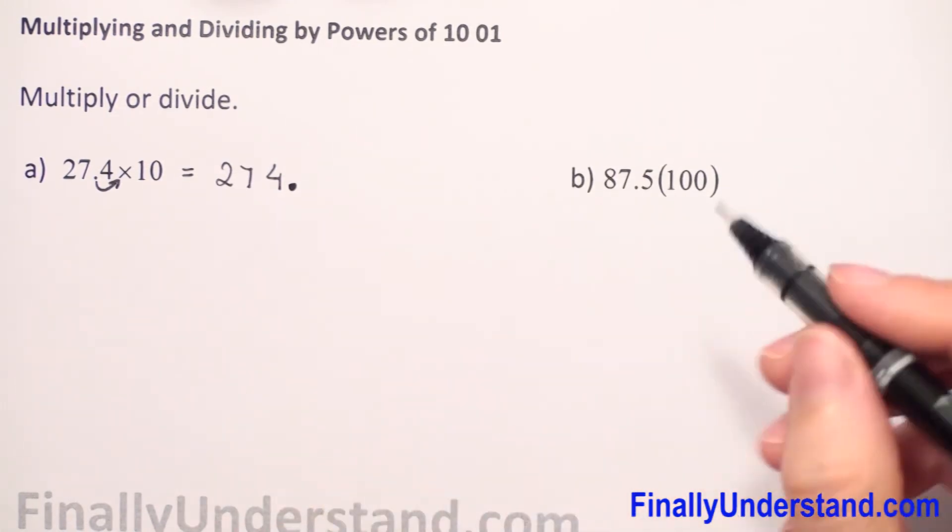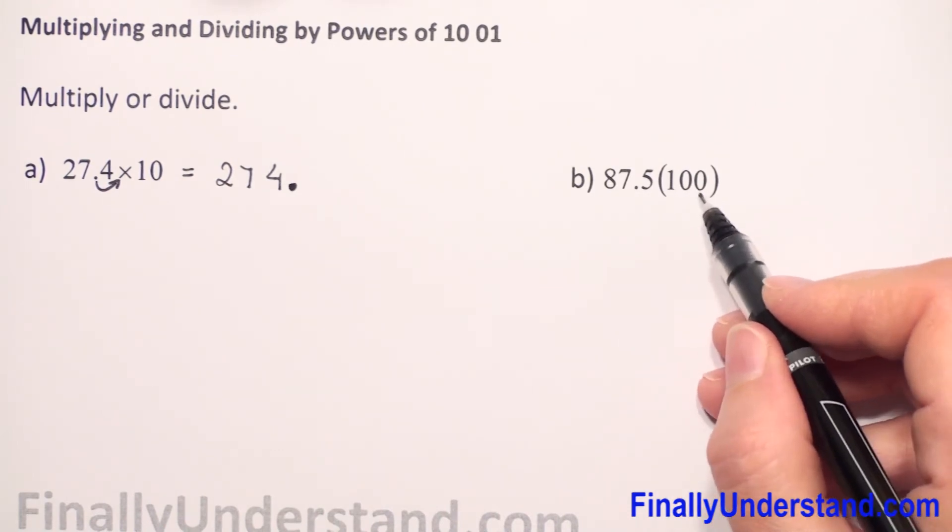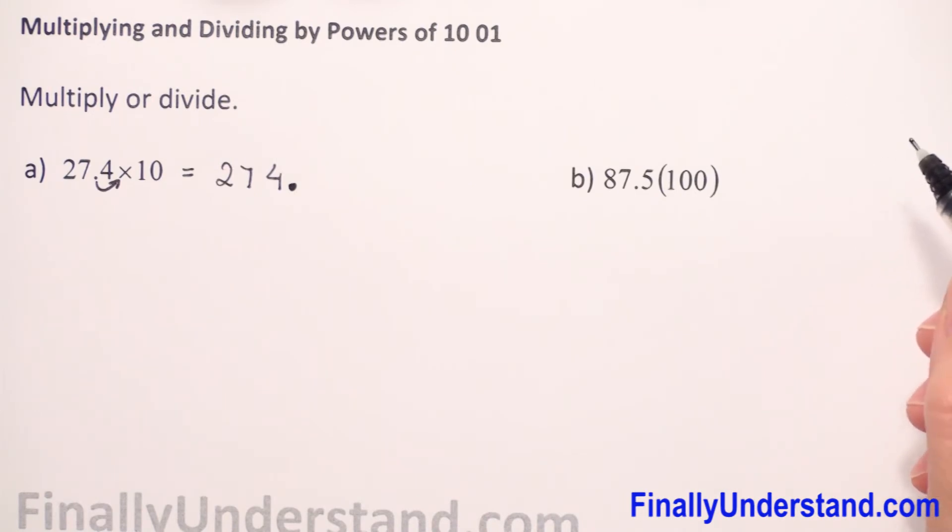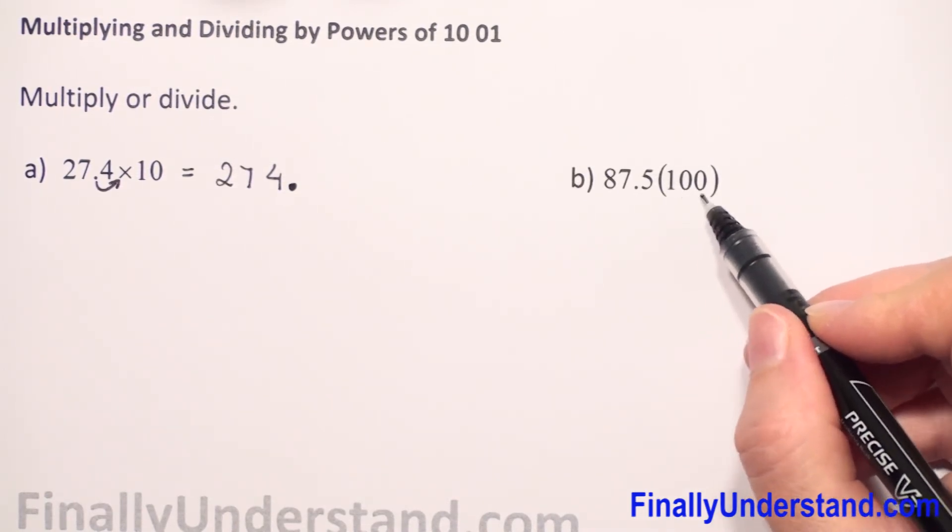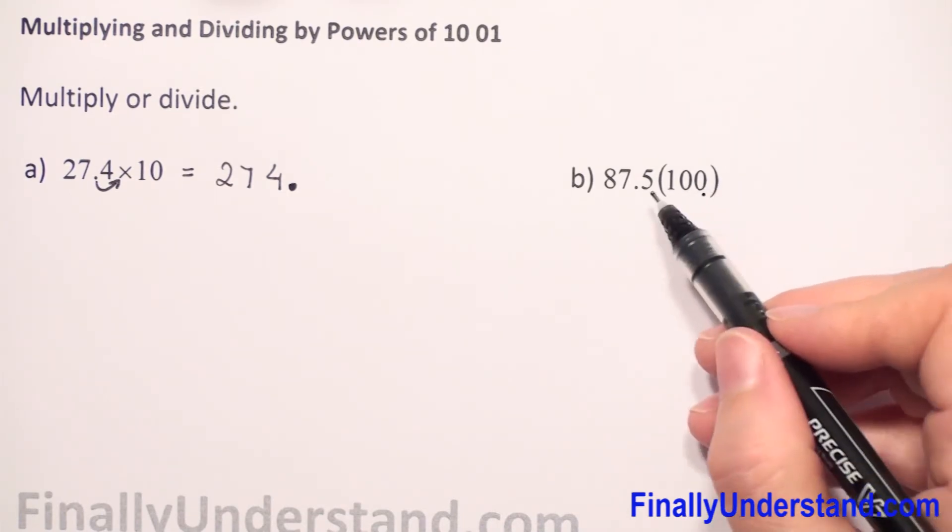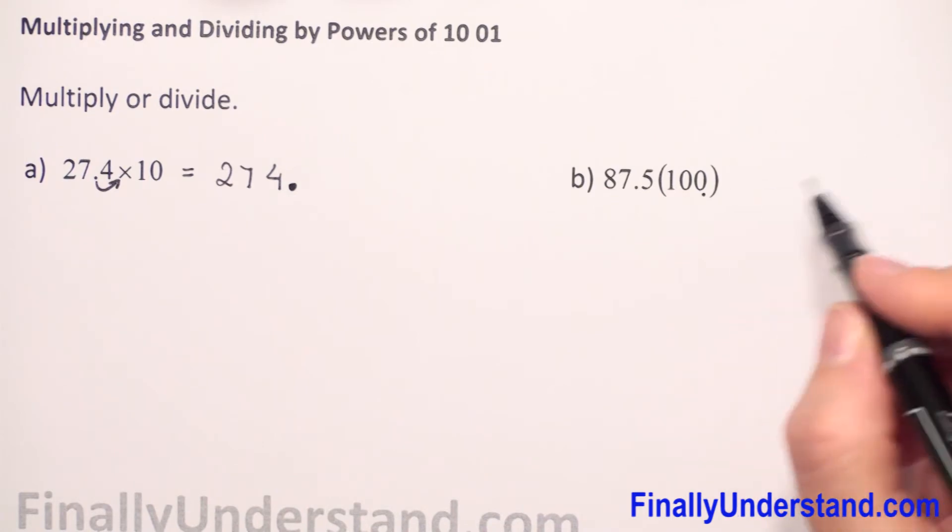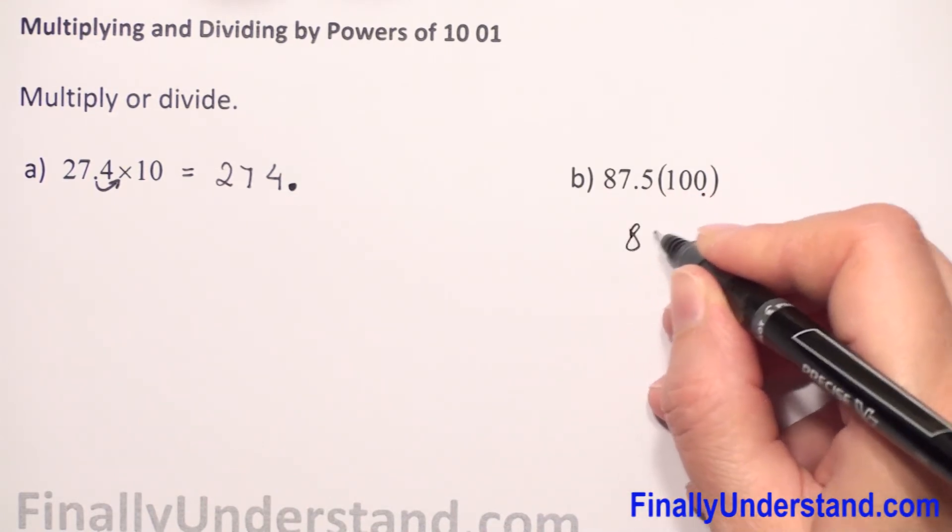Next we have 87.5, and we have to multiply times 100. So first, when we have to multiply by powers of 10, we check the number of zeros which we have. We have two zeros, so it means we have to move the decimal point two digits to the right.